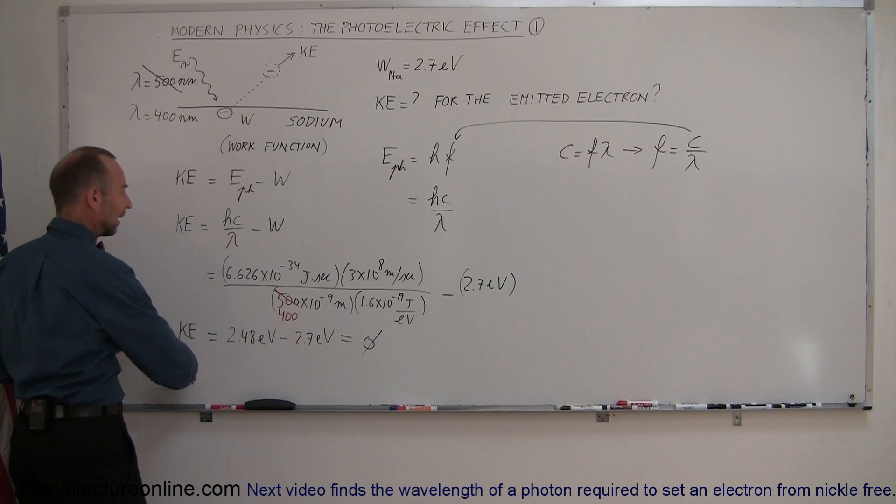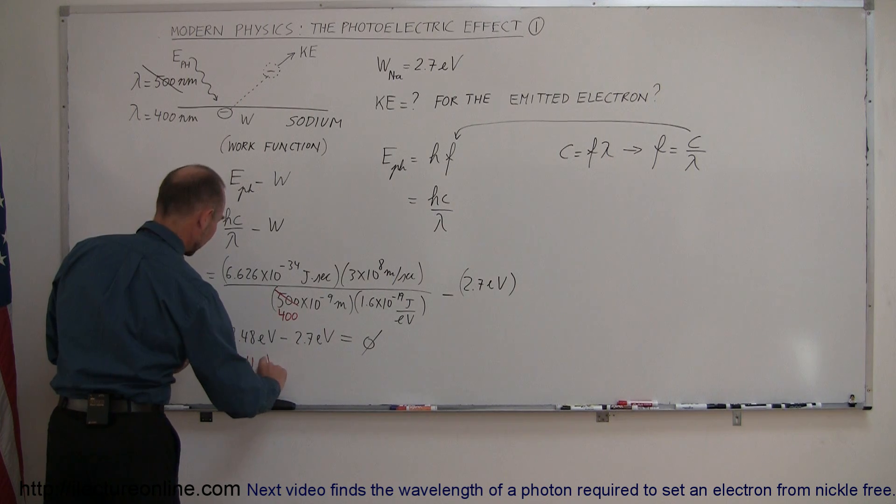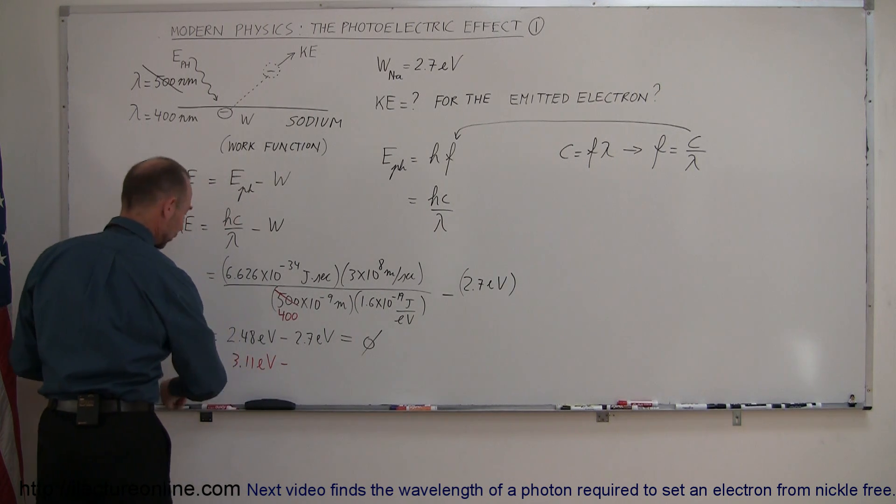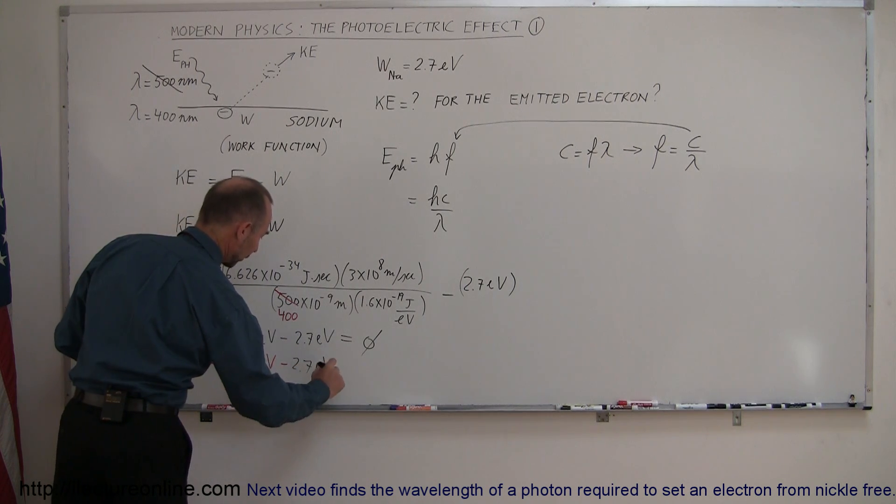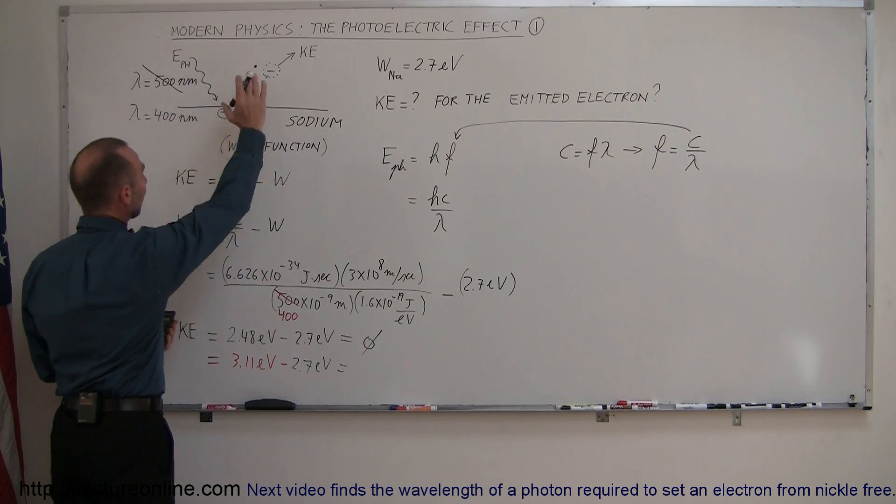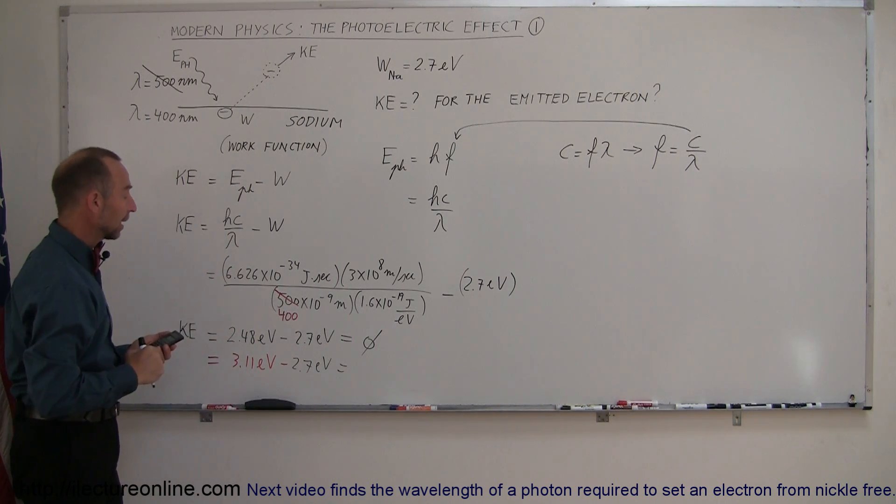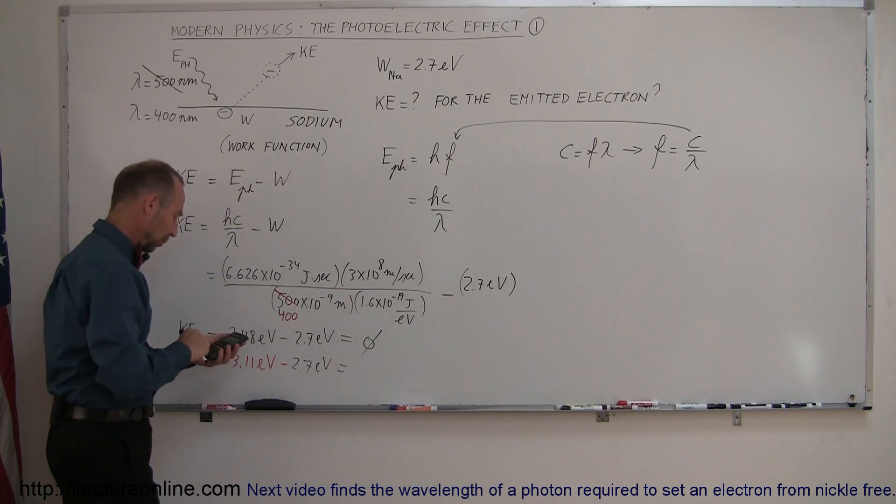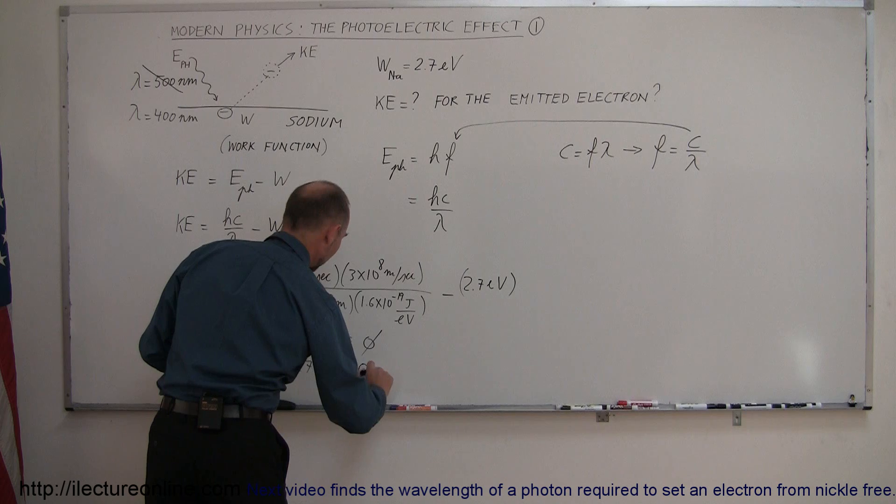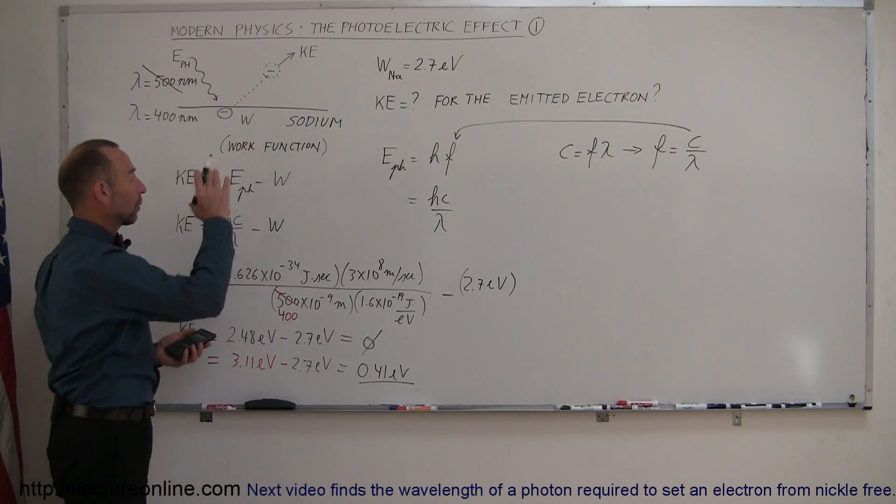So that would be divided by 400. And sure enough, if we do that, we go to the whole calculation again. This would be equal to 3.11 electron volts minus, of course, we still have the 2.7 electron volts for the work function. And now you see, yes, there would be sufficient energy within the photon to set the electron free. And not only that, the remainder would then be put into the electron to give it kinetic energy. So the difference would be 3.11 minus 2.7, and so we have 0.41 electron volts. And that would then be the kinetic energy of the electron that was set free.